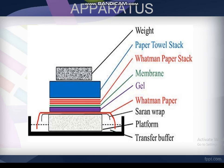This is the apparatus for southern blotting technique. As you can see, there are different components: weight, paper towel stack, Whatman paper stack, membrane, gel, Whatman paper, Saran wrap, platform, and transfer buffer.